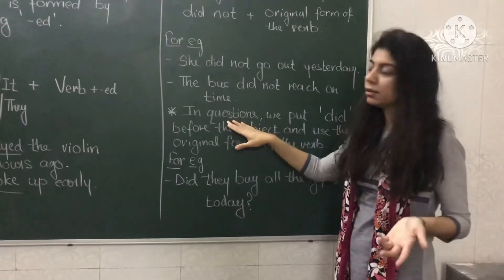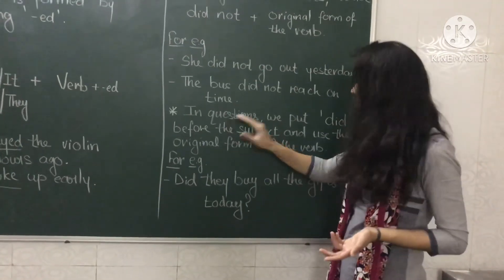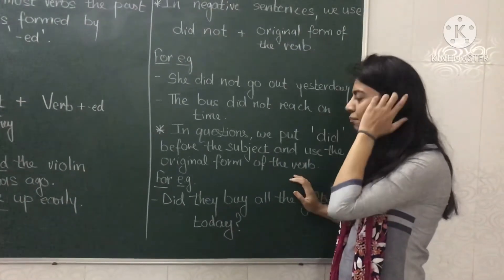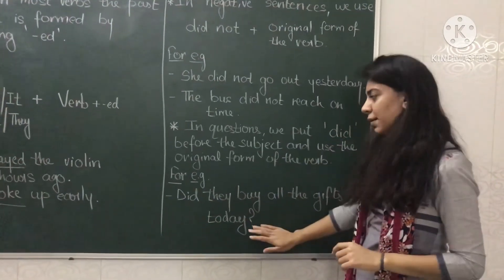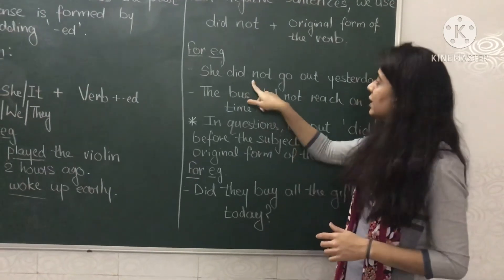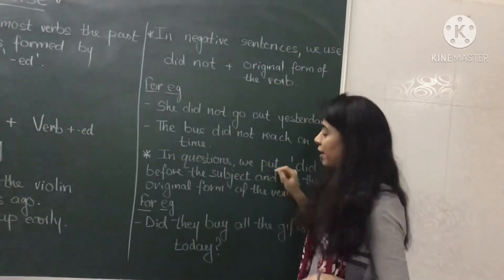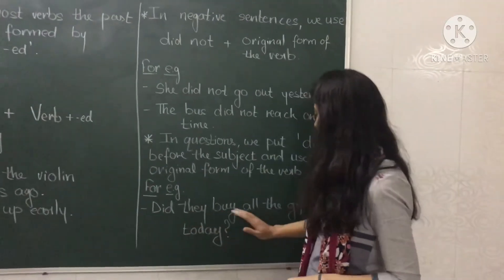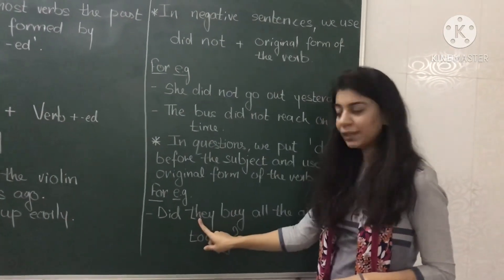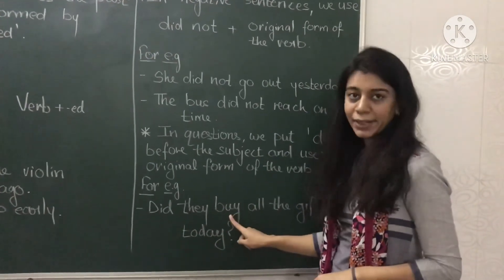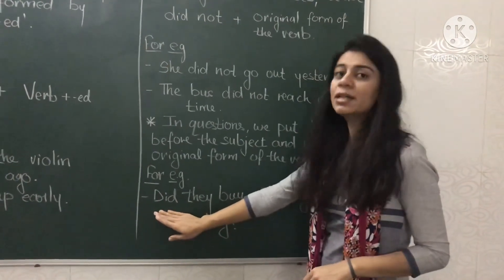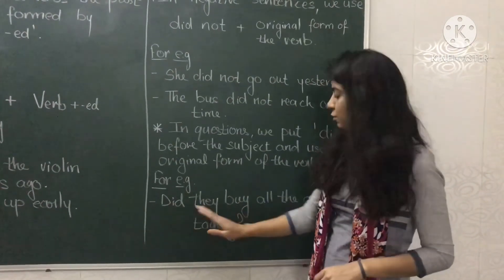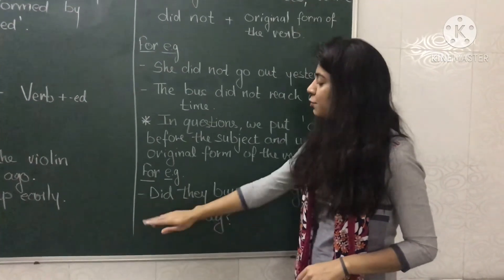Similarly, in questions, if we need to form any questions in simple past, we put 'did' before the subject and use the original form of the verb. For example, 'Did they buy all the gifts today?' In negative sentences we were using 'did not' plus original form of the verb, while making questions we use 'did' before the subject. Here 'did' comes before the subject 'they,' and we use the original form of the verb 'buy.' We have not used 'brought' because 'did' already shows the action is in the past, so we use the original form of the verb 'buy.'